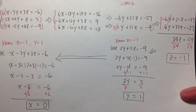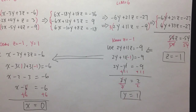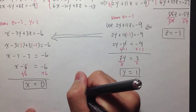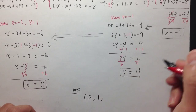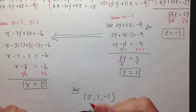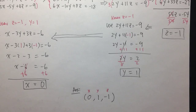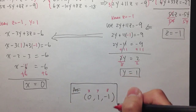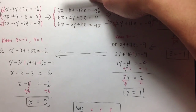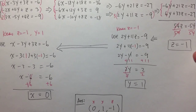So our answer is x equals 0, y equals 1, and z equals negative 1. We can also write this as an ordered triple: (0, 1, negative 1), written in alphabetical order x, y, z. Just be patient, be organized, and this is how I like to organize my work to solve systems of equations.